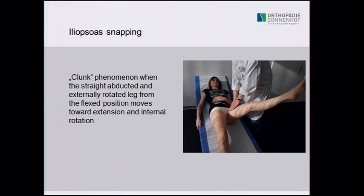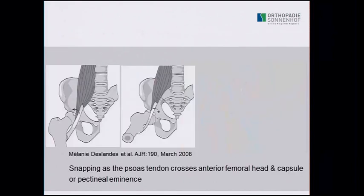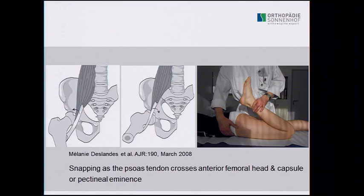Patients with iliopsoas snapping describe that when rising from a relaxed seated position, the hip seems blocked, they must make some movement, sometimes there is a clunk, and then the hip is free again. Everybody thinks it is blocking in the joint, but it is likely the iliopsoas snapping over the capsule or pectineal eminence. I see patients who have been operated on for these signs — for example by hip arthroscopy — who do not improve because the psoas snapping remains. You can also test the psoas in full knee flexion: if the pelvis lifts, the psoas may be short.